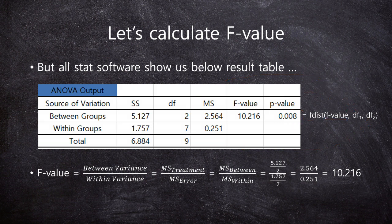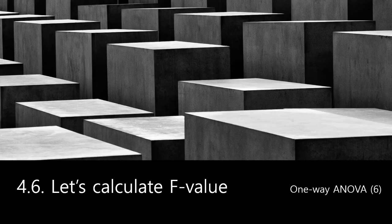This is the calculation of F value and the result table of one-way ANOVA. Now you have covered all the key steps of one-way ANOVA. Today we are done with section 4.6: Let's calculate F value, one-way ANOVA. See you next time.